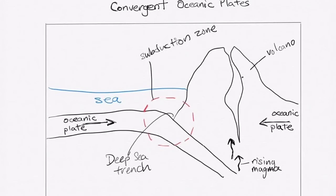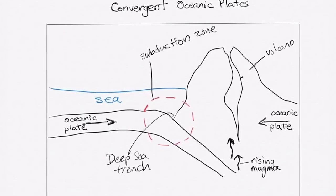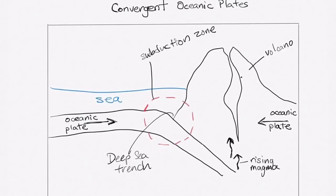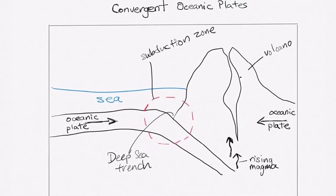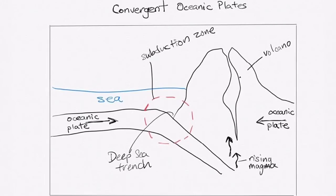First one we will talk about Convergent Plates. Convergent Oceanic Plates where you have two oceanic plates converging together is highly similar to Convergent Oceanic and Continental Plates. The only difference is for the one with Continental Plates, there is a tendency for us to sketch in addition to the volcano, mountains.